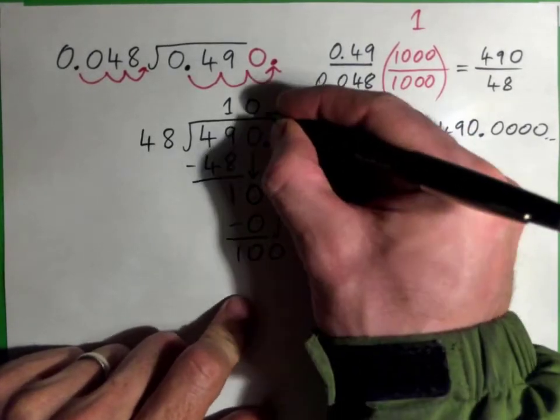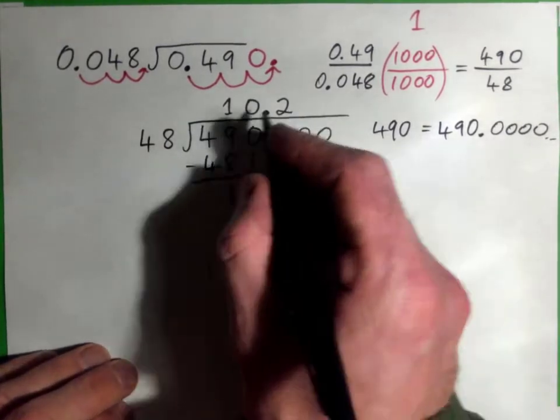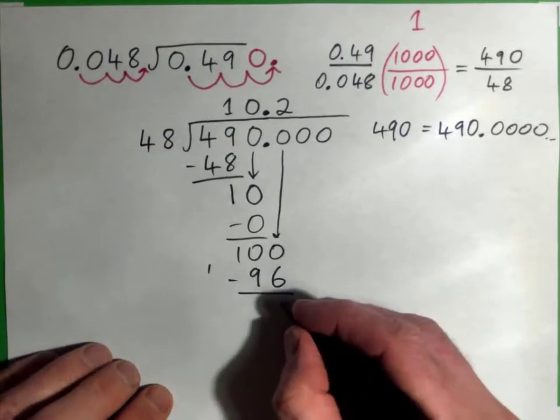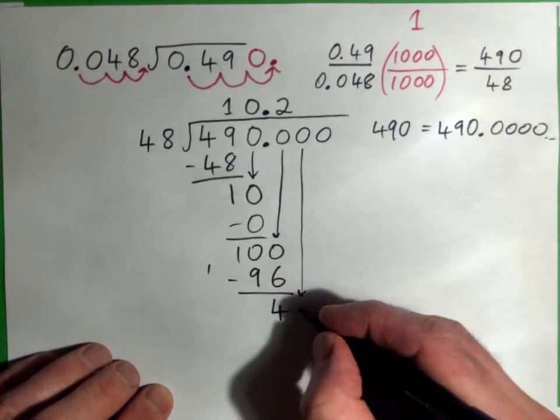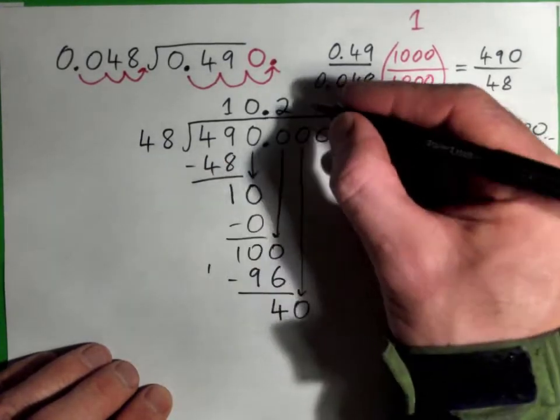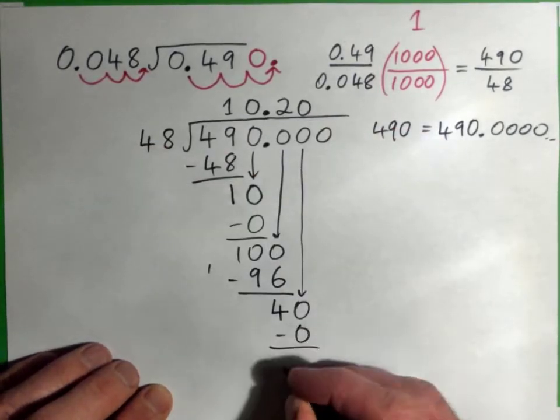And 48 into 100 goes twice. And this decimal point must go up here. Now 2 times 8 is 16, carry 1. 2 times 4 is 8, and 1 is 9. Now subtract, 100 minus 96 is 4. And I'll bring this 0 down. 48 into 40 will not go. It goes 0 times. 0 times 48 is 0. And subtract to get 40.